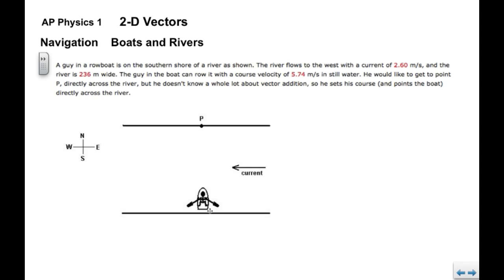Here's a guy in a rowboat. He's on the south shore, the current is flowing this way to the west. We're given the current, 2.6 meters per second, and we're also given that the river is 236 meters wide. Now we're going to say that the guy can row with a course velocity of 5.74 meters per second in still water. So that's how fast he can row the boat. He would like to get directly to point P.